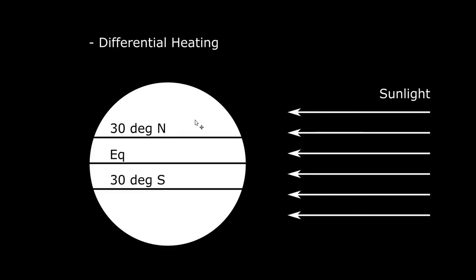Let's discuss this differential heating. Here I've got a representation of the Earth with 30 degrees north latitude, the equator, and 30 degrees south latitude. For simplicity's sake, this is what it would look like during an equinox — March 21st or September 21st. These arrows represent sunlight or radiation from the sun. We know that the Earth's surface is not heated evenly; that's why we have higher temperatures near the equator and in the tropics than at the poles. This differential heating also affects the atmosphere in important ways.